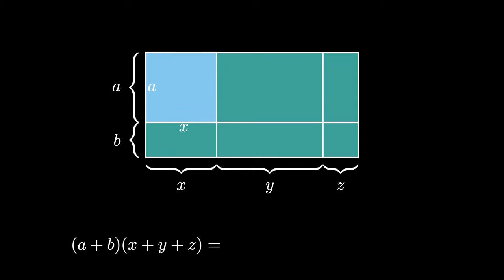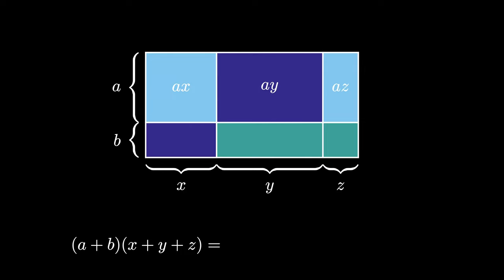The areas of these rectangles can be computed as A times X, A times Y, and A times Z, and the next three have areas B times X, B times Y, and B times Z.